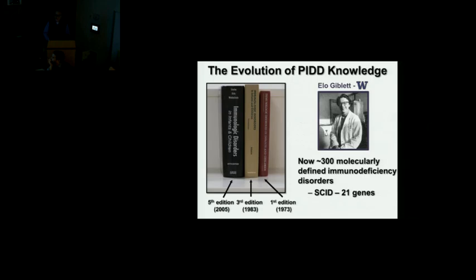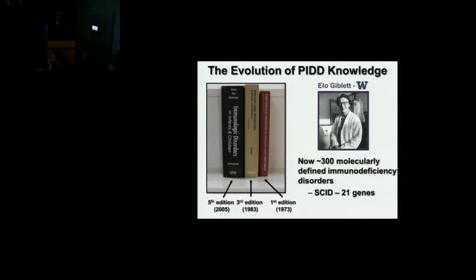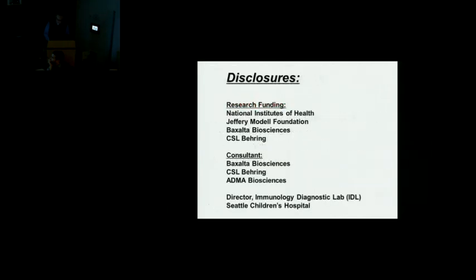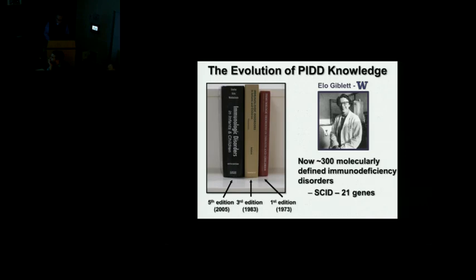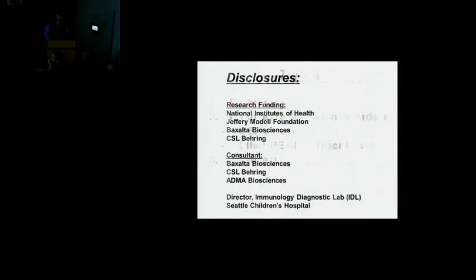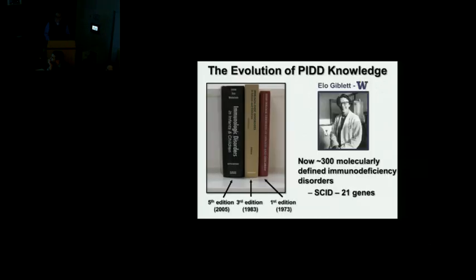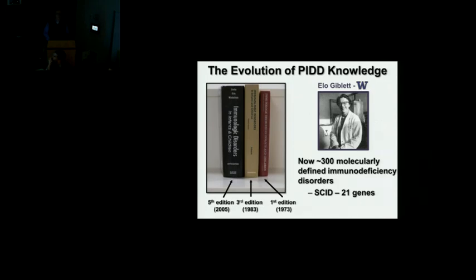The world of primary immune deficiency has really grown a lot. This is the Stiehm textbook of clinical immunology and immunologic disorders — the first edition was published in 1973. At that point we knew there were different types of lymphocytes, that there were B cells and T cells, though maybe not so well characterized. The third edition came in 1983, and then the genetic revolution in primary immune deficiency diseases really began in the early 1990s.